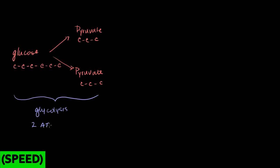We got a net payoff of 2 ATPs — I always say net because remember, it used 2 ATPs in that investment stage and then it generated 4, so on a net basis it generated 4, used 2, giving us 2 ATPs. And it also produced 2 NADHs. That's what we got out of glycolysis.